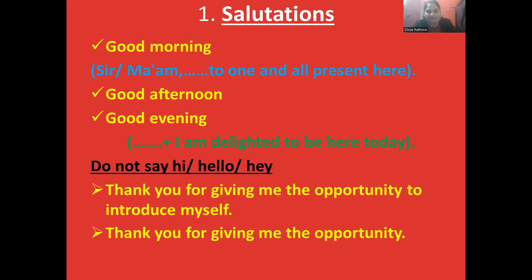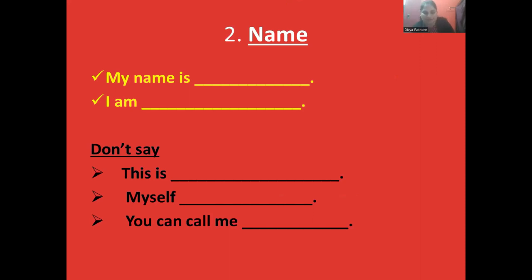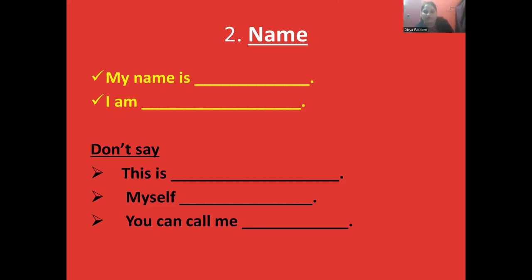Do not say hello or hi in front of the interviewer. After greetings, if we want to tell about our name, we must always introduce ourselves by our full name. You can say 'my name is so and so' or 'I am so and so.' Don't say 'this is Divya Rathur,' 'myself Divya Rathur,' or 'you can call me this and that.' Don't do this.